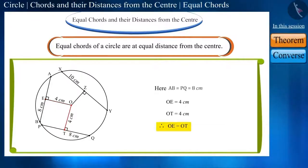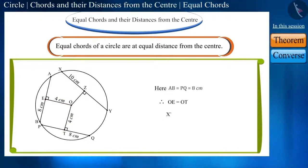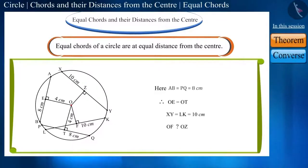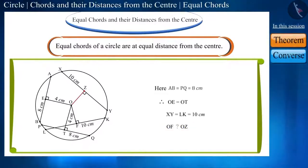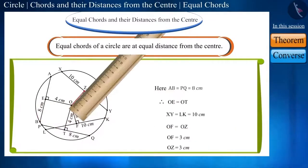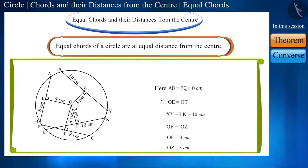Similarly, draw a chord LK equal to chord XY and also draw a perpendicular OF on it from the center. Friends, will OF and OZ also be equal? Yes, you can see that OF and OZ are also equal. So in this way, we verify that equal chords of a circle are at equal distance from the center.